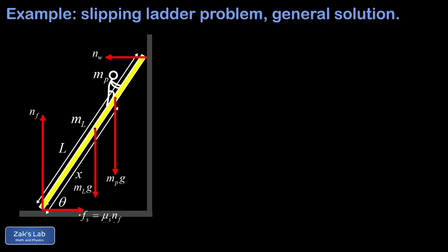To understand why there is a breakaway point, consider the rotation axis at the floor contact point. For static equilibrium, clockwise torques must equal counterclockwise torques. As the person moves higher, their lever arm increases, creating a larger clockwise torque. This requires N_W to grow to provide a larger counterclockwise torque. But if N_W pushing left gets bigger, then the static friction force pushing right must also get bigger — until it reaches its maximum value at the breakaway point.